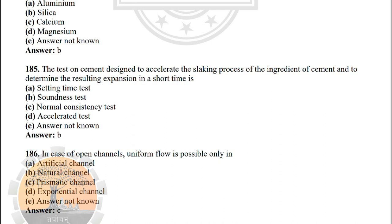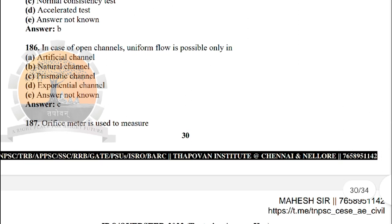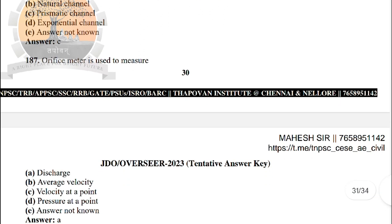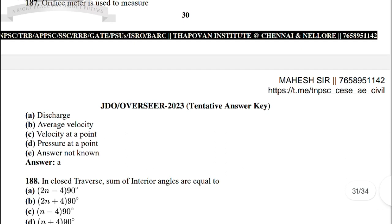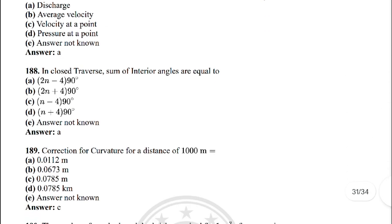Next: the test on cement designed to accelerate the ageing process and determine the resulting expansion in a short time is — the correct answer is option B: soundness test. Next: in an open channel, uniform flow is possible only in — the correct answer is option C: prismatic channel. Next: an orifice meter is used to measure — the correct answer is option C: discharge.